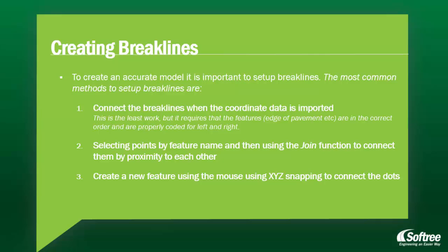To create an accurate model, it is important to set up breaklines. The most common methods to set up breaklines are: connecting the breaklines when the coordinate data is important; selecting points by feature name and then using the join function to connect them by proximity to each other; and finally, creating a new feature using the mouse and using XYZ snapping to connect the dots.